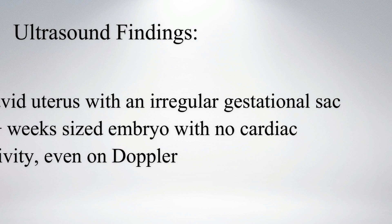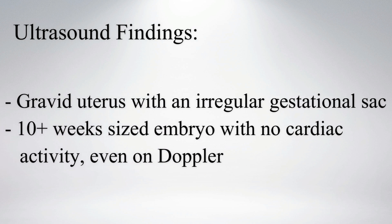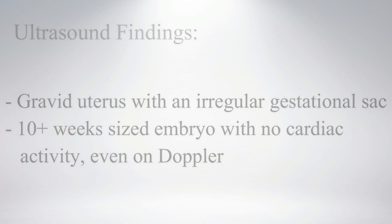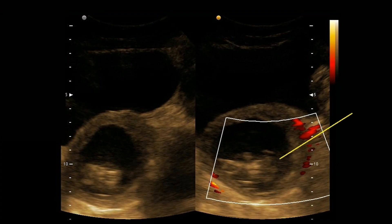On ultrasound, an irregular gestational sac is noted within a gravid uterus. A 10-plus week-sized embryo is seen within the sac with no cardiac activity, even on Doppler. The gestational sac outline is slightly irregular on these images.